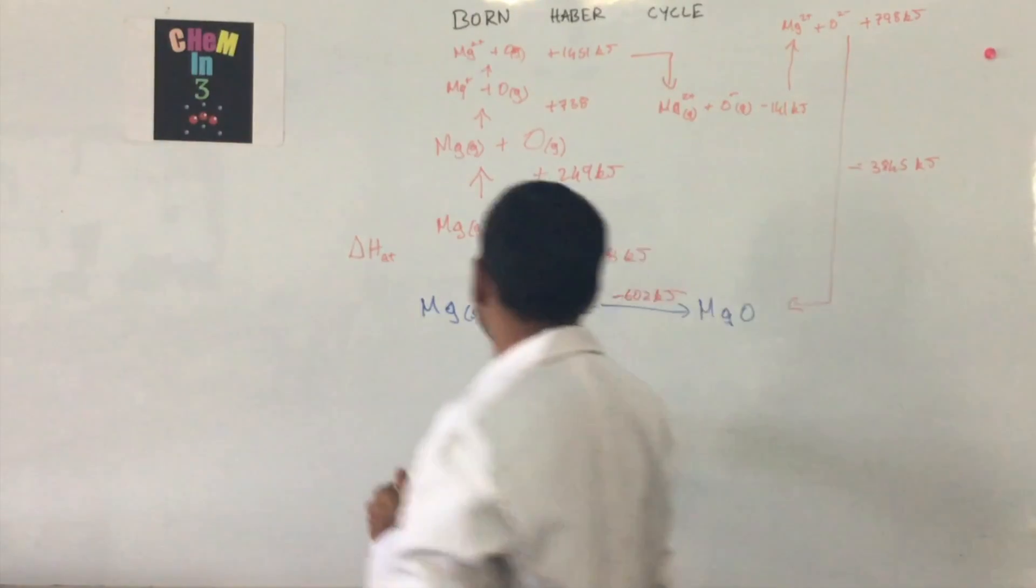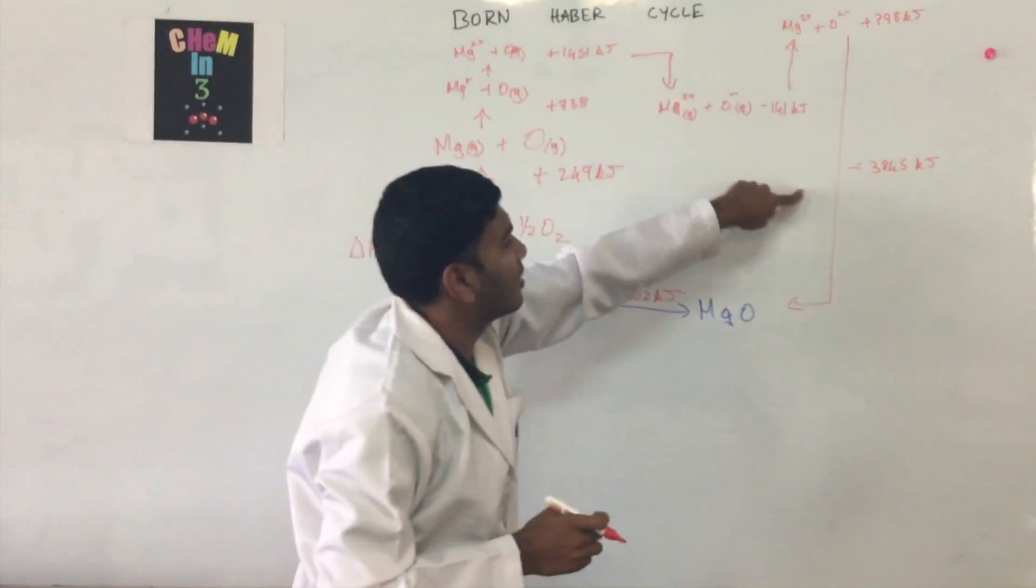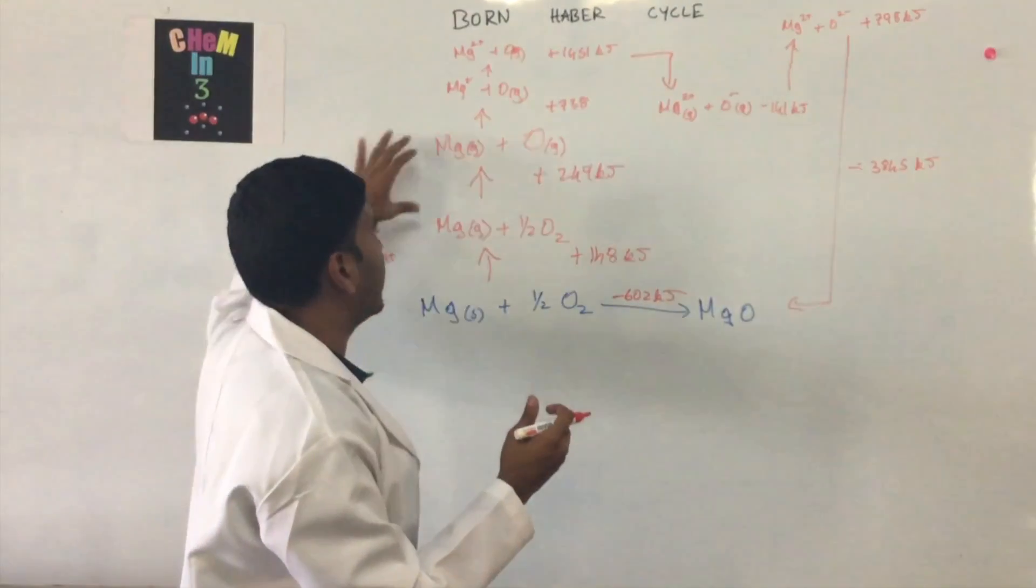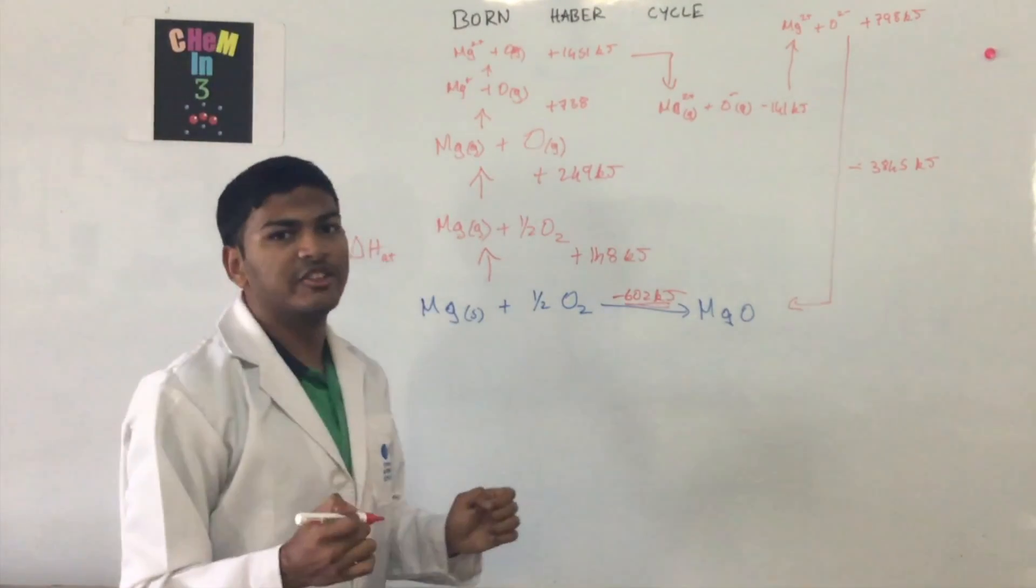So the Born-Haber cycle basically states that the sum of all the energy that is being spent or taken in on this cycle is equivalent to this, minus 602 kilojoules.